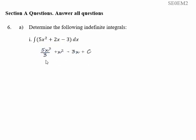To check our answer, we'll just differentiate it and see we get back to the question. If we differentiate the first term, we're going to get 3 times 5x squared over 3. The 3s will cancel and we'll end up with 5x squared. If we differentiate x squared, we'll get 2x. If we differentiate minus 3x, we'll get minus 3, and if we differentiate a constant, that will disappear. So it looks as if our answer is right.